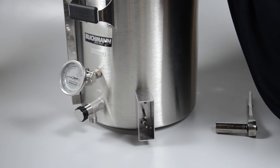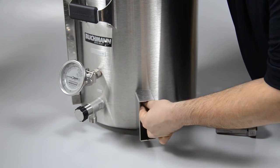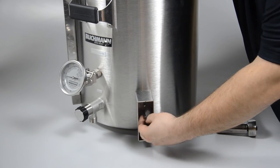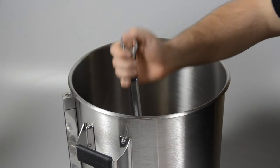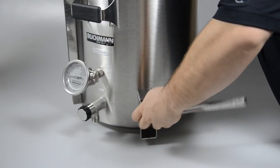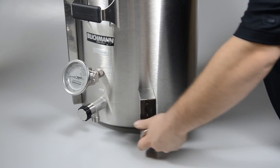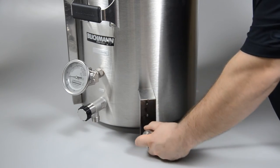While holding the boil coil in place, install one bulkhead retaining nut on each threaded bulkhead finger tight. Use the 7/8 socket and ratchet to tighten the bulkhead retaining nuts while aligning the boil coil from the inside of the kettle with the 1 inch open-ended or adjustable wrench.